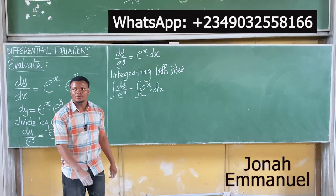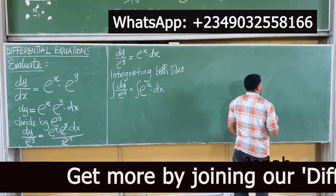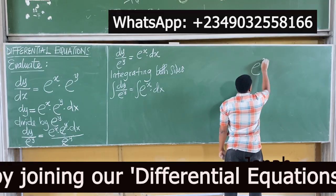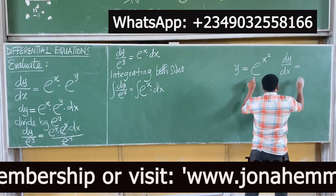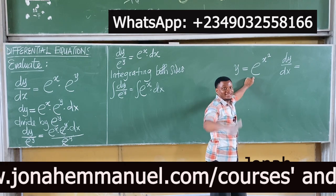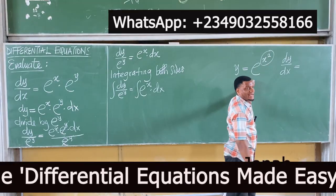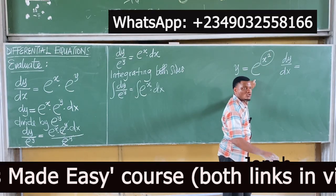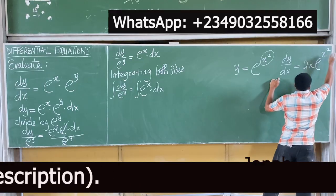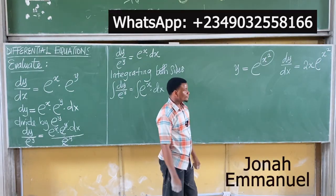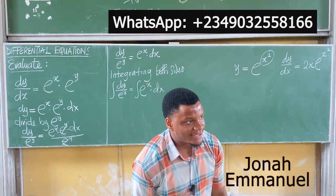Let me explain the exponential shortcut. If y equals e^(x²), what is dy/dx? In differentiating exponential terms, you leave the e and focus on the power. The power is x², differentiate x² to get 2x, and that 2x attaches back. So the integration shortcut for exponential terms is: pick the power, differentiate it, and take it as the denominator. That's the shortcut.